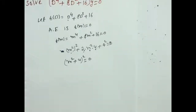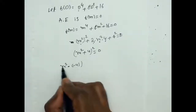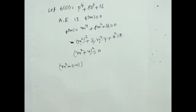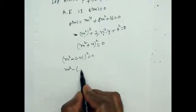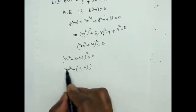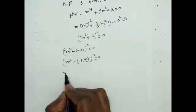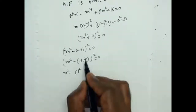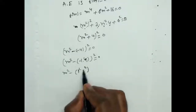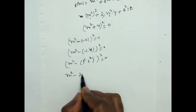So (m² + 4)² = 0. Now I am writing m² + 4 as m² − (−4), and since −1 = i² (complex number), and 4 = 2², we get m² − (i² × 2²) = (m² − (2i)²)² = 0.